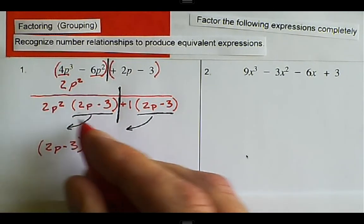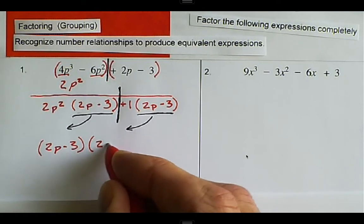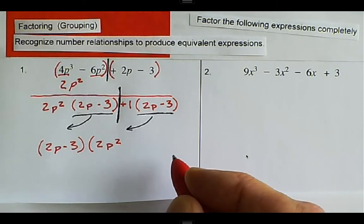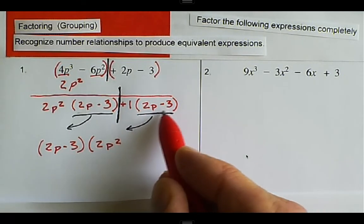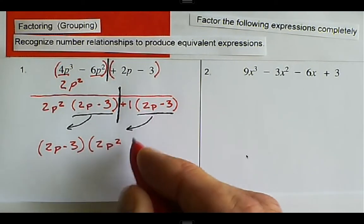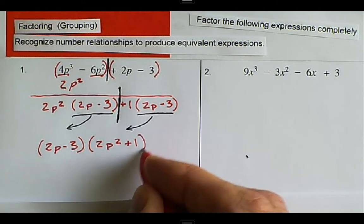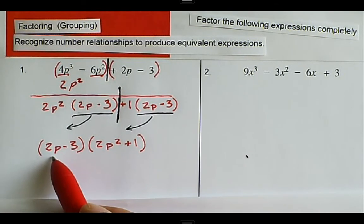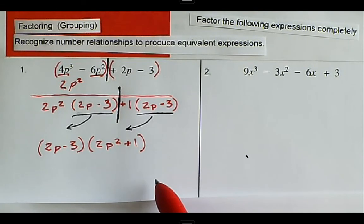So we took the 2P minus 3 out. What's left? We're still going to have 2P squared left. We factored the 2P minus 3 out. That's out front here. So what's left now that that's gone? Just the plus 1. And now we've completely factored this first one by grouping.